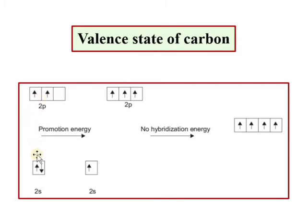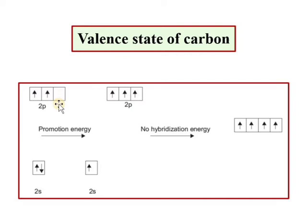One electron from the 2s orbital is transferred to the 2p orbital, giving 4 unpaired electrons. The energy required for this transfer is called the promotion energy. The electron pair is unpaired during this process.